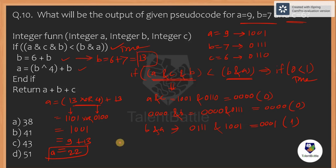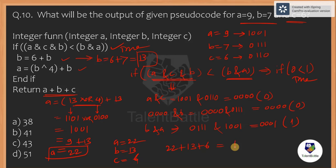22 plus 13 plus 6 equals 41. Option B is correct. The function accepts integers, checks the if condition using bitwise AND, if true calculates updated b and a using XOR, then returns a plus b plus c with c unchanged throughout. Final answer is 41.